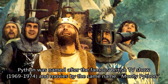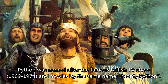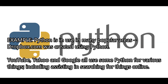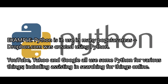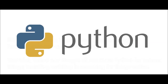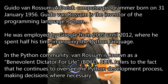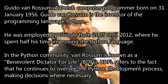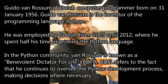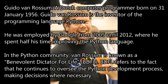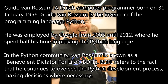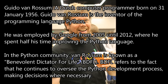Python was named after the famous British TV show and movies, Monty Python. Python is in use in many popular areas — Dropbox.com was created using Python, and YouTube, Yahoo, and Google all use some Python for various things, including assisting in searching online. Guido van Rossum, a Dutch computer programmer born on 31 January 1956, is the inventor of Python. He was employed by Google from 2005 until 2012, where he spent half his time improving Python. In the Python community, van Rossum is known as the Benevolent Dictator for Life (BDFL), referring to the fact that he continues to oversee the Python development process.